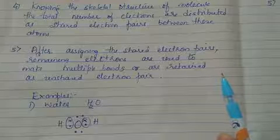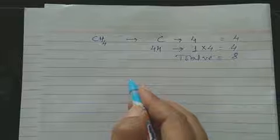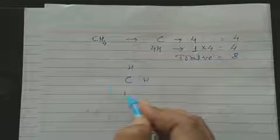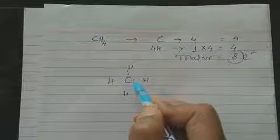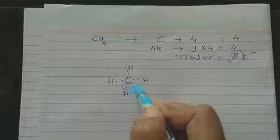Let's take the example of CH₄ again. Carbon has 4 valence electrons, and 4 hydrogen atoms each contribute 1, giving 8 total valence electrons. Carbon is placed in the center with hydrogen atoms around it. The 8 electrons are distributed as four shared pairs — one pair between carbon and each hydrogen. This is the Lewis dot structure of methane.